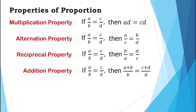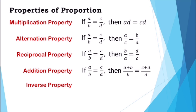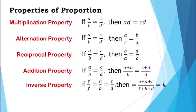Next, we have the inverse property: if a over b is equal to c over d, then a plus c over b plus d is equal to k, where k is a constant of proportionality.